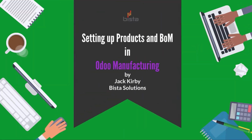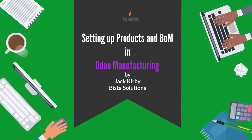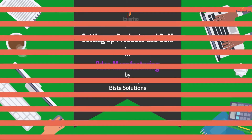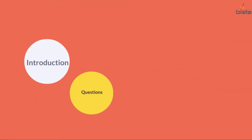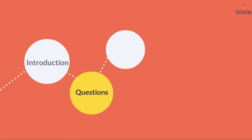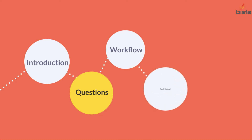My name is Jack Kirby with Vista Solutions and today we're going to talk about how, in manufacturing, you set up products and bill of materials. We're going to talk about the questions that managers ask when setting up products and bill of materials. We're going to look at a workflow diagram of how the product template is set up. We're going to walk through an example of creating a main manufactured product and answer some questions using the analysis.